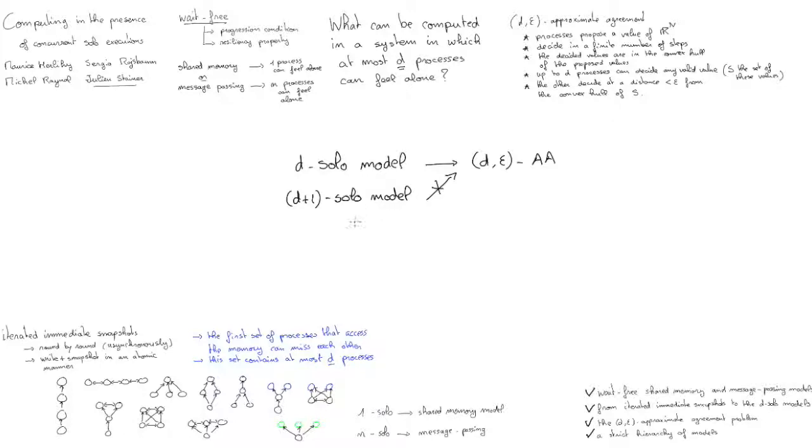This means that we have a hierarchy that spans from message passing, so the n-solo model, to the shared memory, so the one-solo model. And the existence of the D-epsilon approximate agreement shows that you have non-trivial tasks that you can solve in the D-solo model, but not anymore in the D-plus-one solo model. In terms of computability, this hierarchy of model is strict.